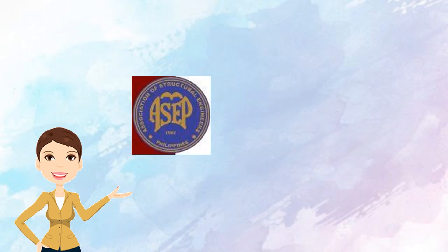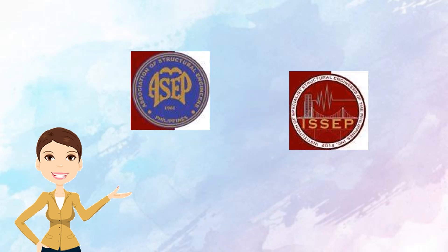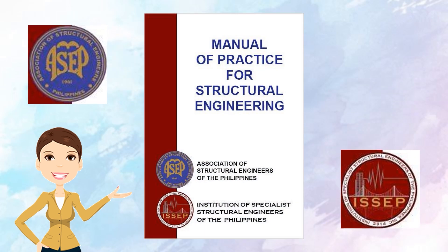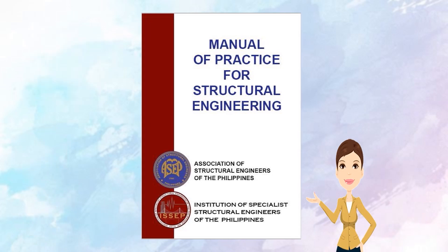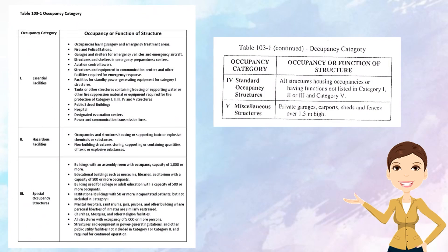Last January, the Association of Structural Engineers of the Philippines, Inc., together with the Institution of Specialist Structural Engineers of the Philippines, released a Manual of Practice for Structural Engineering. This manual is similar to that of the Philippine Institute of Civil Engineers, which was previously released. In this manual, located in Chapter 5.8, is a schedule of minimum fee for basic services as percentage of construction cost for each building design category.